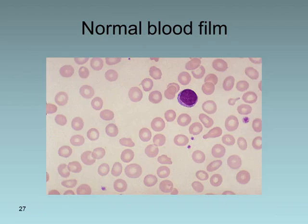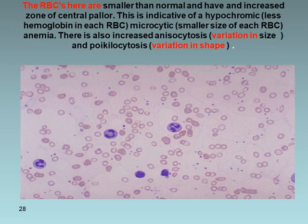This slide shows a normal blood smear with normal RBCs, a few platelets, and a lymphocyte. In iron deficiency anemia, red cells become smaller than normal with an increased central zone of pallor — indicating hypochromia — and there is microcytosis, anisocytosis (variation in size), and poikilocytosis (variation in shape). The platelet count is increased (thrombocytosis), and pencil-shaped red cells as well as rouleaux formation can be seen.